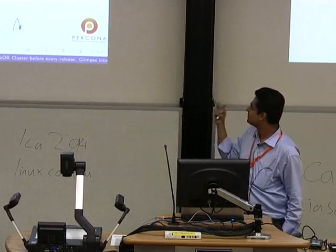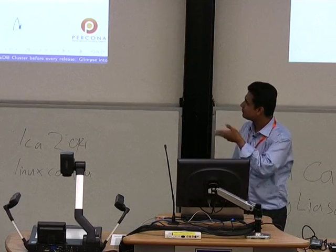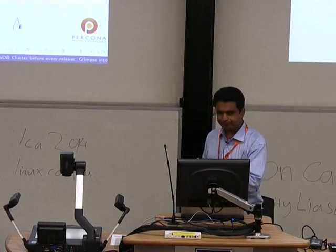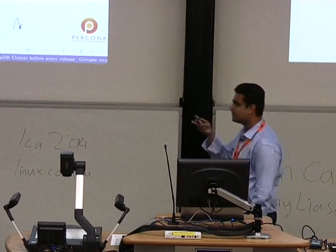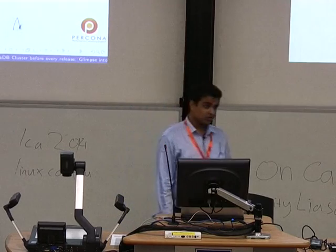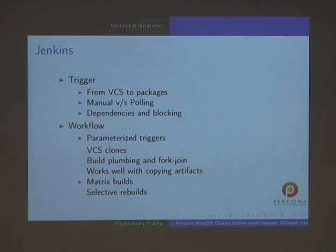Certain parameters need to be passed to the job side of it. By the way, we are using the Bazaar plugin for Jenkins, which Stuart and some others including people from MariaDB have contributed to. What I mean by fork and join is that the VCS clone creates triggers for like three jobs, and we have to wait for all three to complete before triggering packaging - because it doesn't make sense to have packages where the tests have failed.